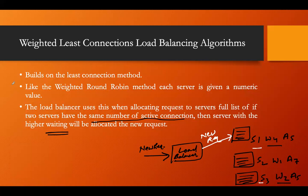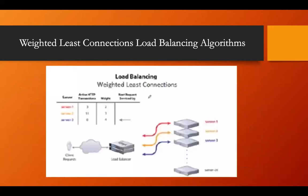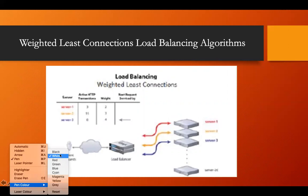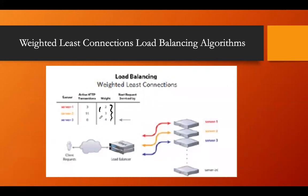So in the weighted least connection algorithm, weights are provided to servers — for example, weights two, three, and four. When active transactions are different, the weight is not taken into consideration. Only when the active transactions are the same does the weight come into play to decide which server gets the new request.